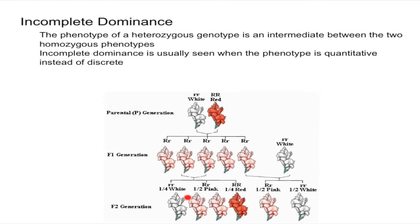You can see down here if you mate two pink snapdragons you're going to get a fourth white, a half pink, and a fourth red.